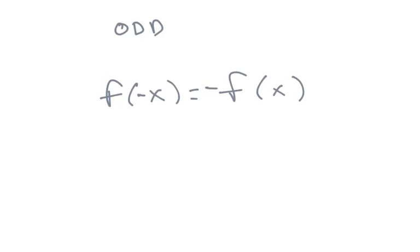An odd function is such that whether you make your x value, if you make your x value negative, let's say, then if you make your x value positive, then the y value changes.